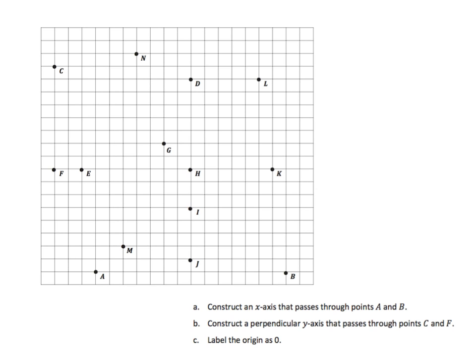I've got our coordinate plane here that we need to look at, and we'll work through a series of tasks using the coordinate plane that you see on the slide. The first task, A, tells us to construct an x-axis that passes through points A and B. I would expect you to use a straight edge. I'm going to do the best I can to create a line that's reasonably straight, going through points A and B, and I'll label that x.